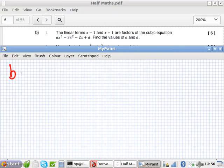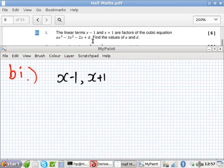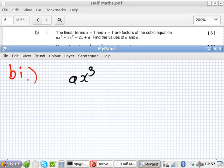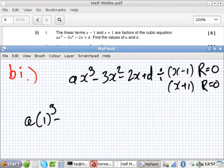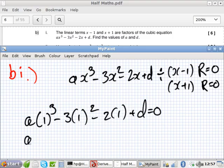Part b1: x minus 1 and x plus 1 are factors of this cubic ax³ minus 3x² minus 2x plus d. So that means when you divide by x minus 1 and x plus 1, the remainder for both of them should be 0 if they're factors. So that means if I use 1 or minus 1 in the formula, what should it equal? Yeah, so this should equal 0 and this one should equal 0 as well.